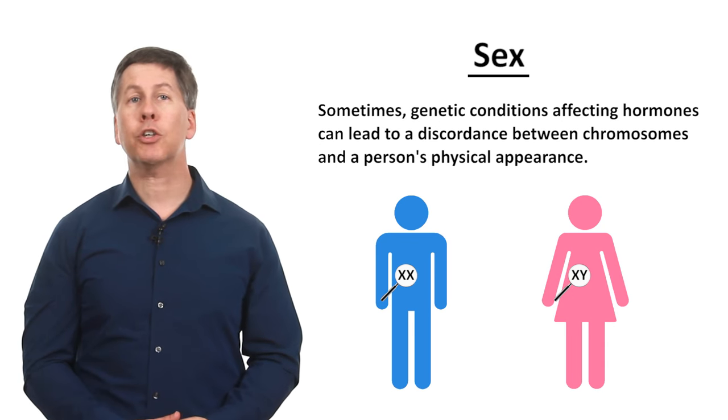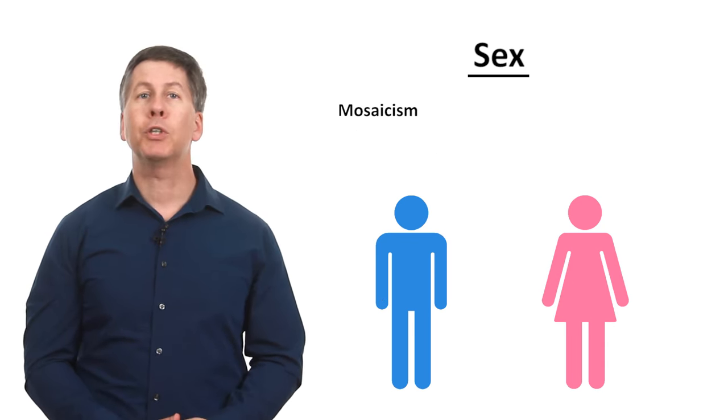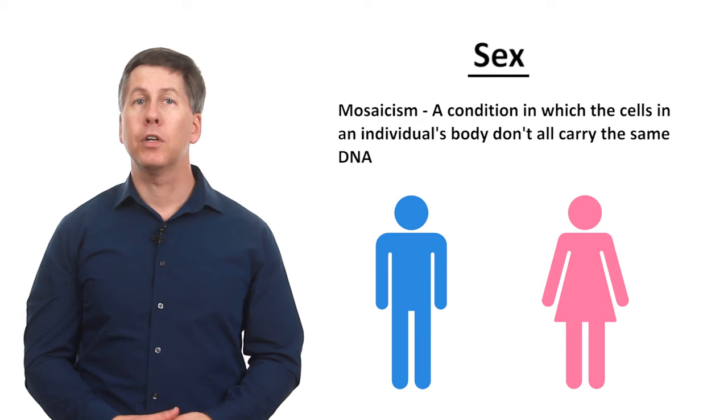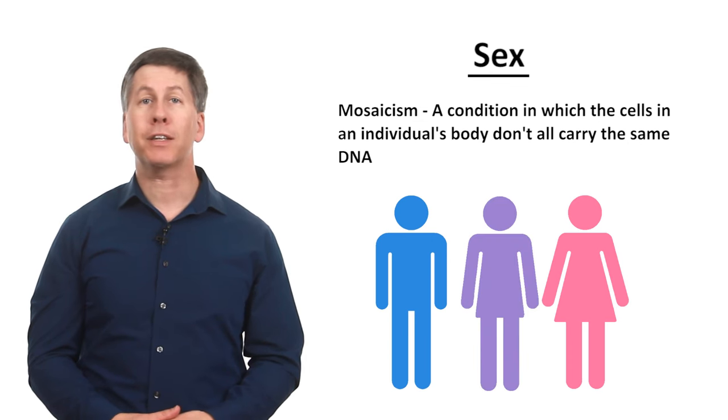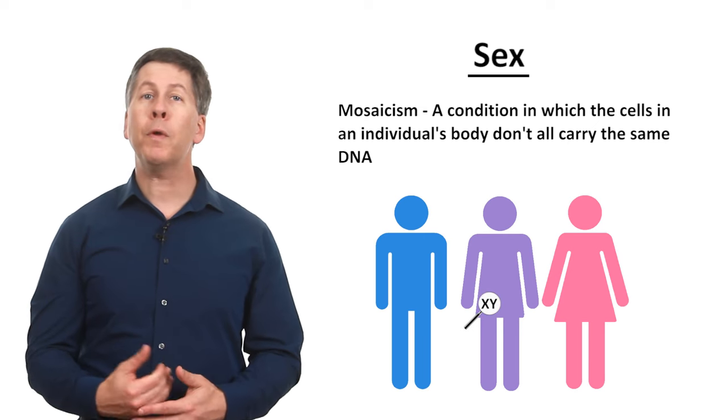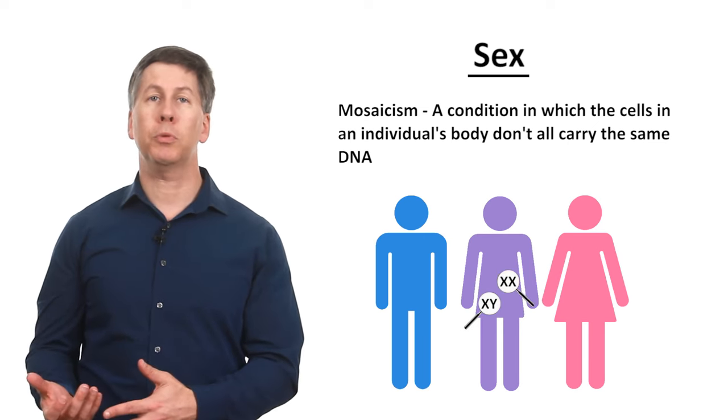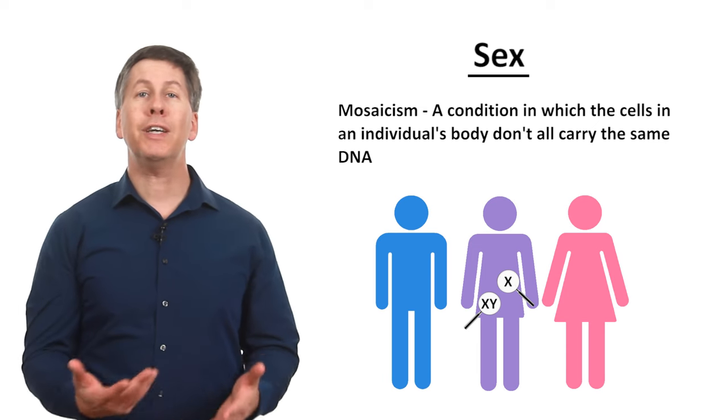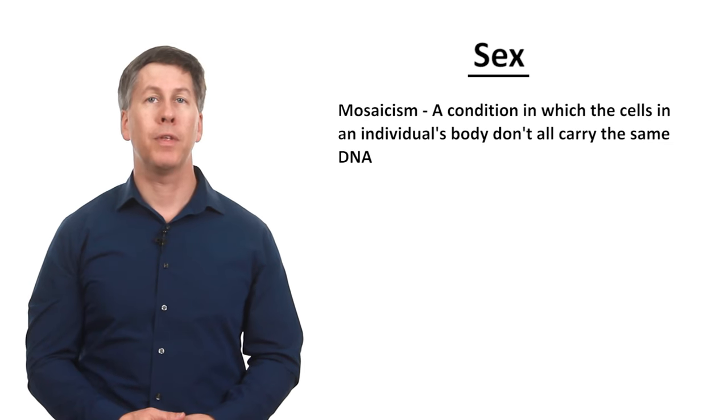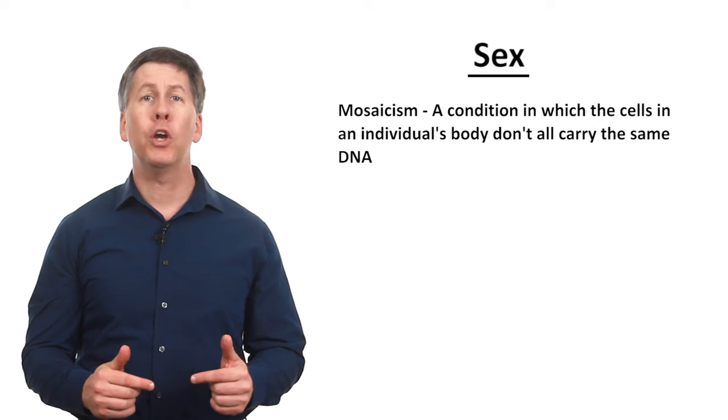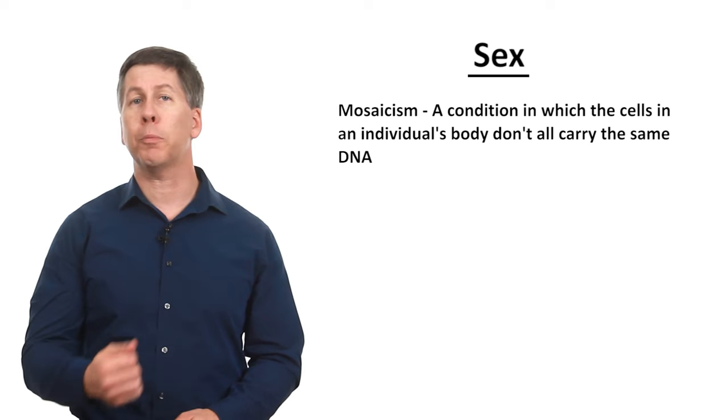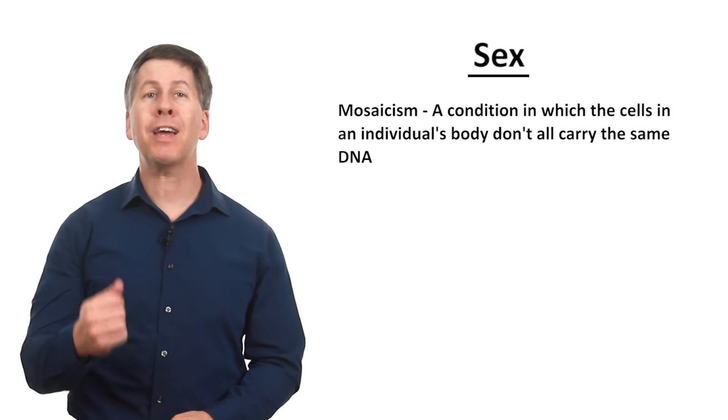A variation of this phenomenon is called mosaicism. Mosaicism is a condition in which the cells in an individual's body don't all carry the same DNA. So when a person has mosaicism affecting the sex chromosomes, some of their cells might carry one X and one Y chromosome, while their other cells might carry two X chromosomes or just one X chromosome. Such individuals can have a very wide diversity of external appearances and internal anatomy. And in fact, some of you watching this video could have either mosaicism of your sex chromosomes, or have a discordance between your chromosomes and your external appearance, and you might not even know about it.